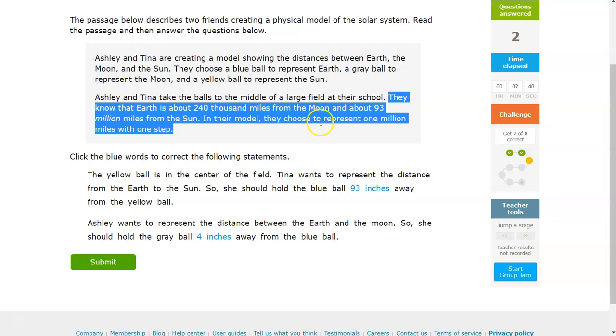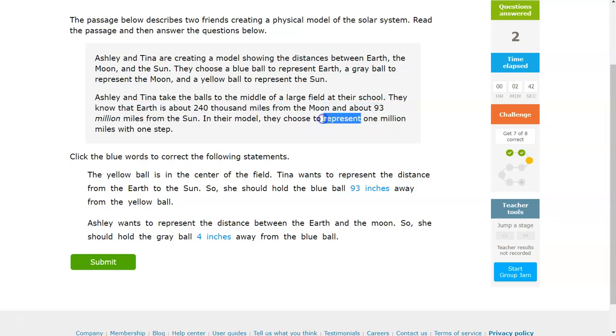So keep that idea in mind because this is going to be important for this passage here. So she should hold the blue ball 93 inches away from the yellow ball is what it says. Or if you click it, it says 93 steps away. So keep in mind that change here where it says one million miles is one step.